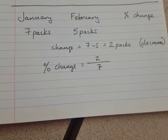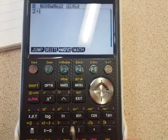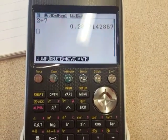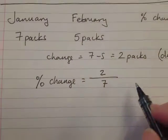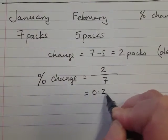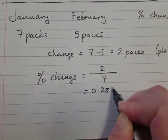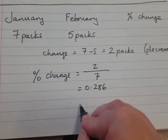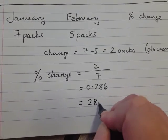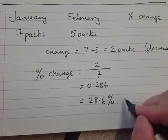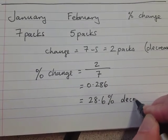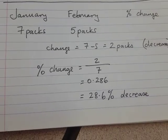Two divided by seven — let's do that on my calculator — and there we go, 0.286. Writing that as a percentage: 28.6 percent, and it went down so it's a decrease. Done.